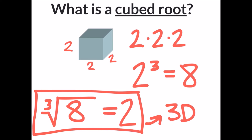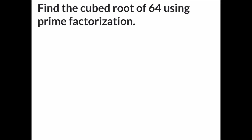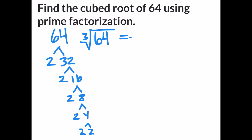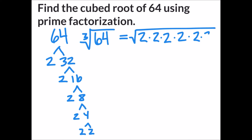For the example, we're looking at the cube root of 64 using prime factorization. I'll start by setting up a prime factor tree: 64 is factored into 2 and 32, 32 into 2 and 16, 16 into 2 and 8, 8 into 2 and 4, and 4 into 2 and 2. The cubed root of 64 equals the product of the ends of our factor tree: 2 times 2 times 2 times 2 times 2 times 2.